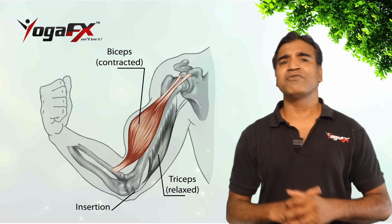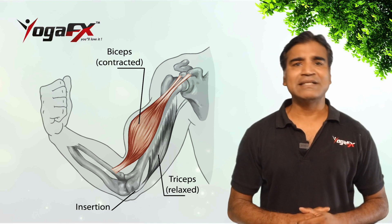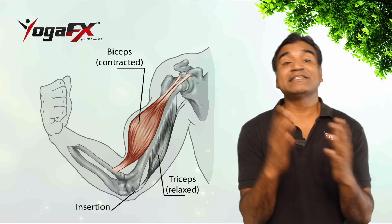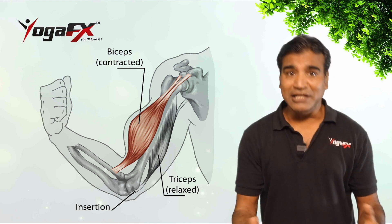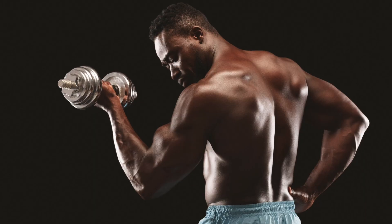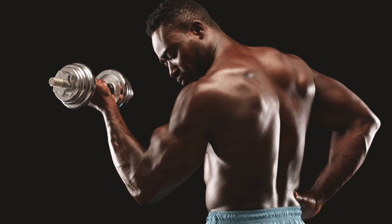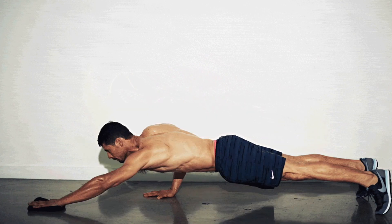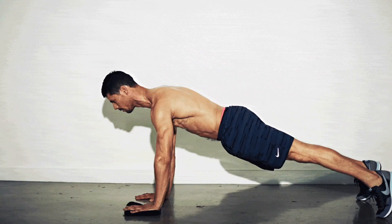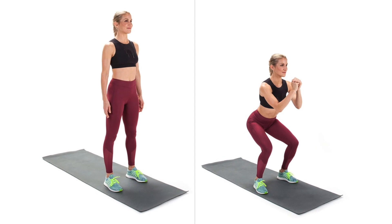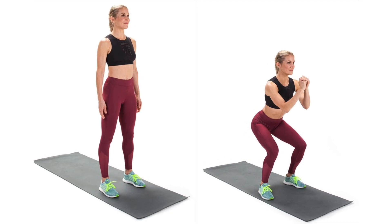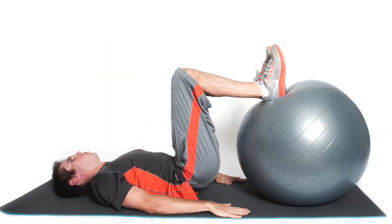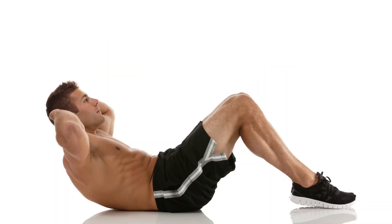Common concentric movements and exercises include lifting objects, bicep curl, extending from a push-up, standing from a squat, hamstring curl, and sit-ups.